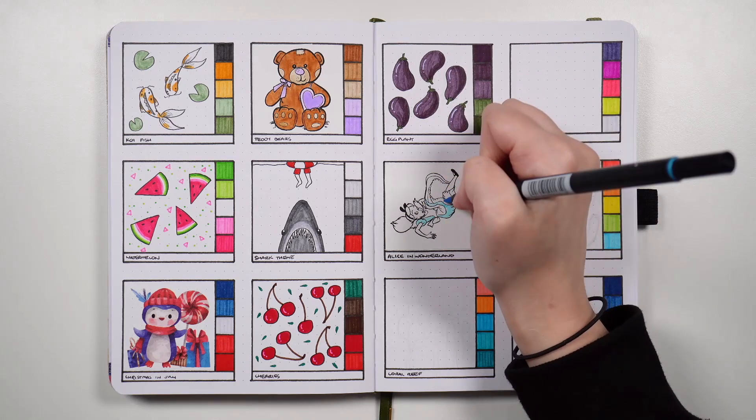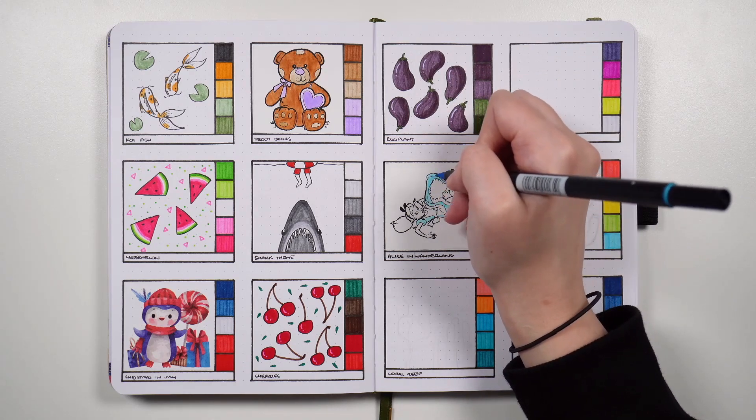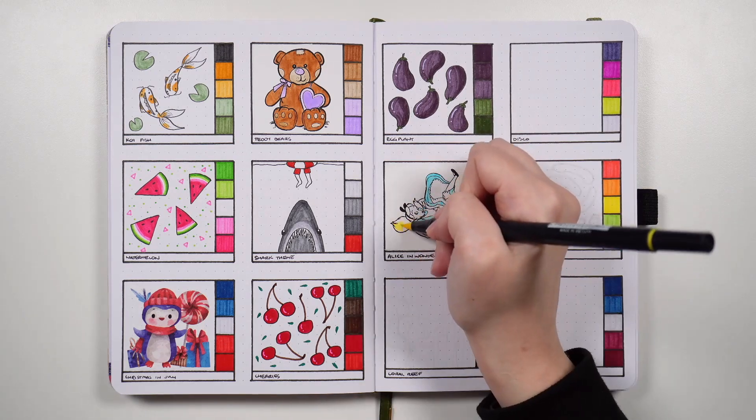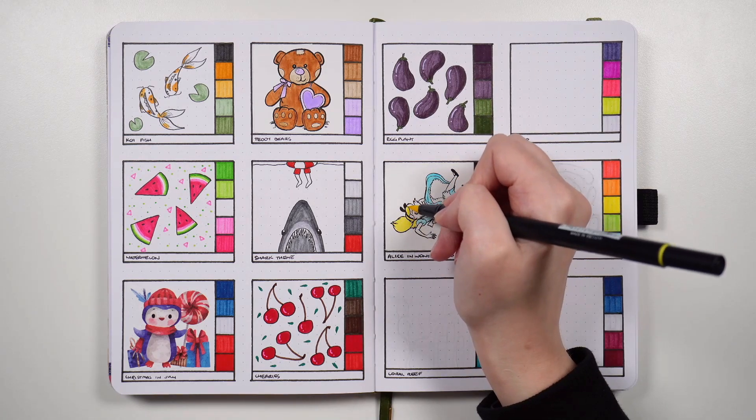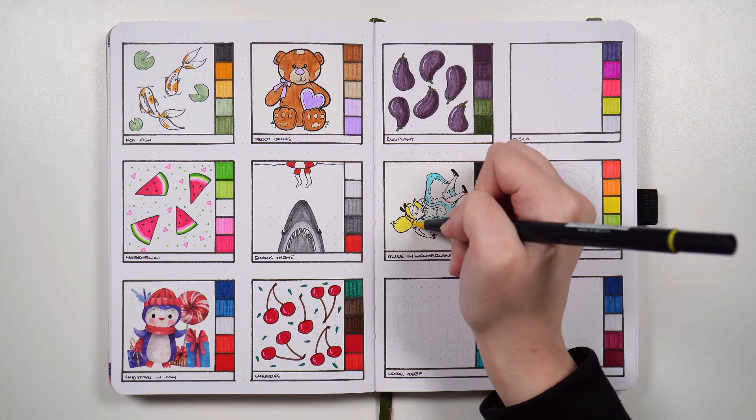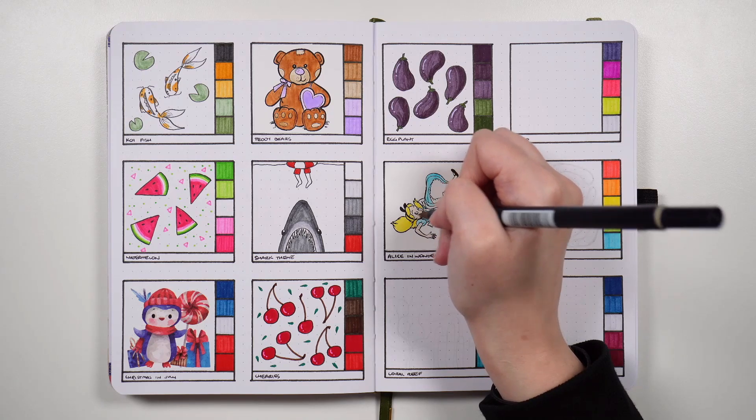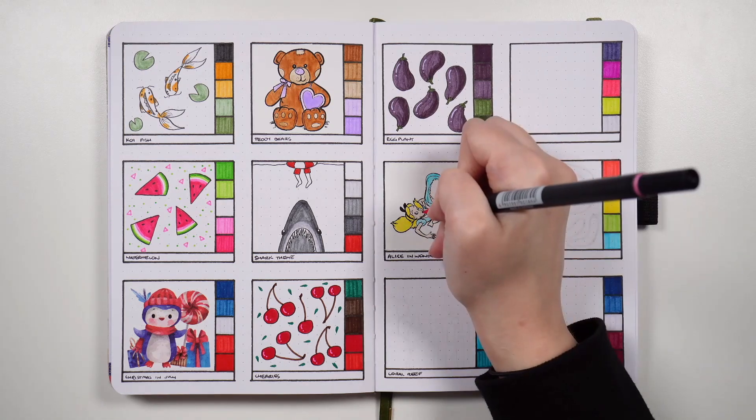But of course if you want to do an Alice in Wonderland theme you don't actually have to include Alice at all. It'd be really fun to have a Mad Hatter's Tea Party theme or one related to the Cheshire Cat or one related to the Queen of Hearts. It's quite an expansive world so you really could come at this from multiple angles. But an Alice in Wonderland theme could be a lot of fun.